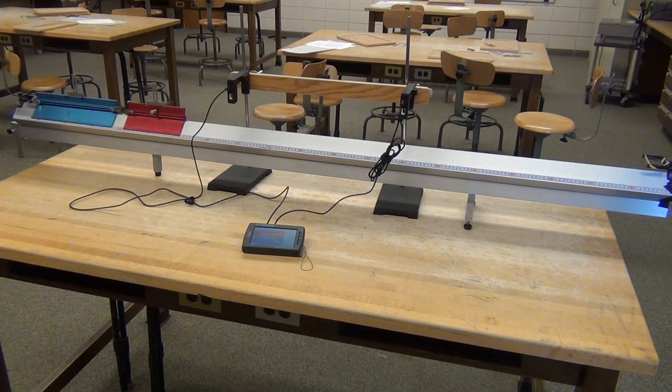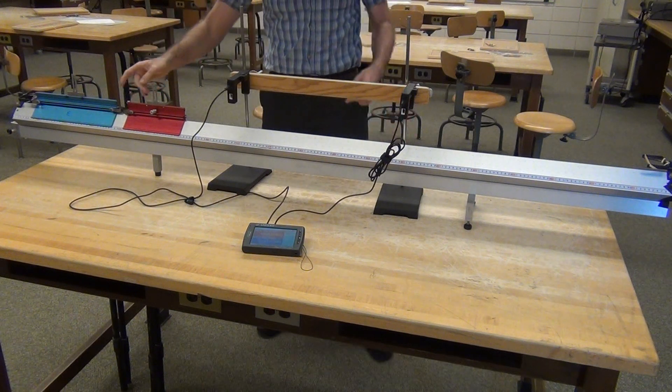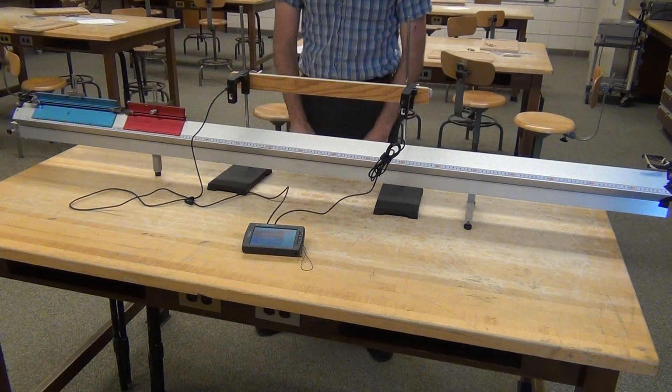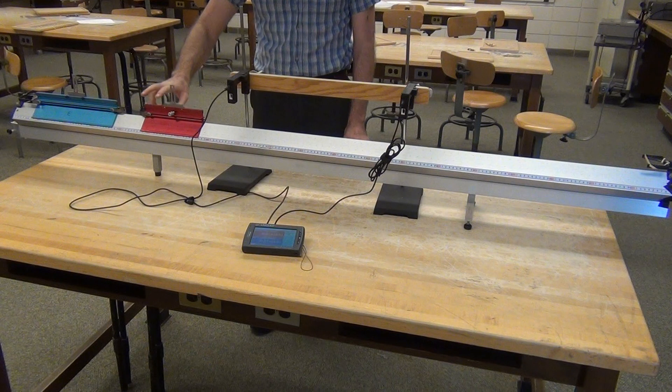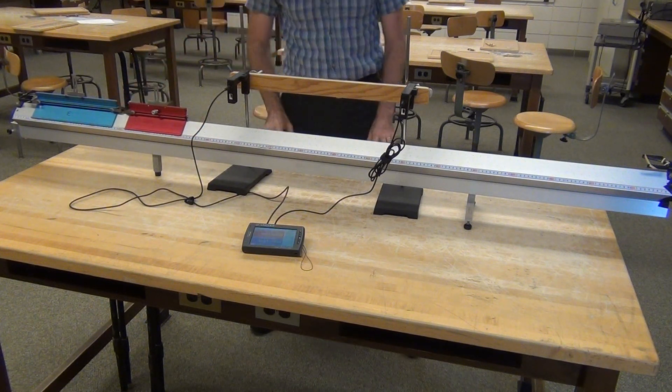In this experiment, we'll be looking at collisions between two gliders on our air track. Get the mass of both gliders independently of each other, measuring them on the scales at the back of the lab.